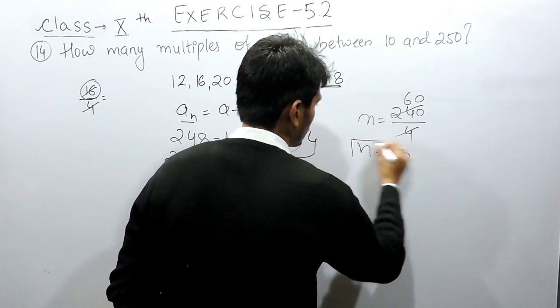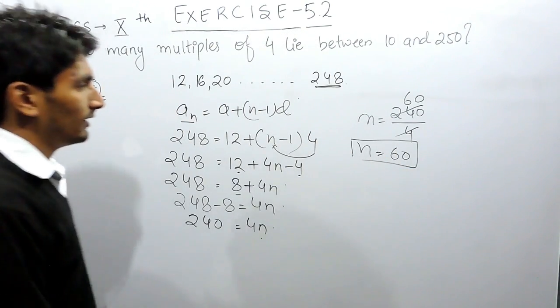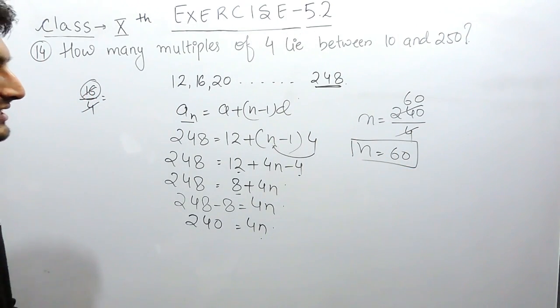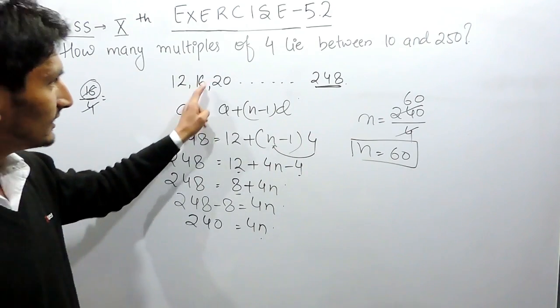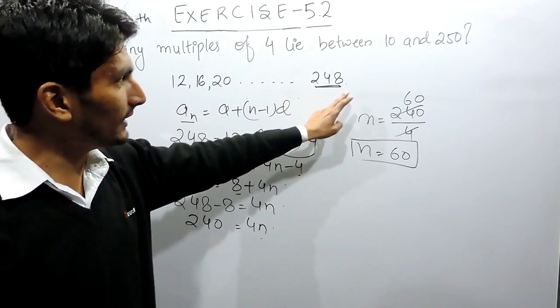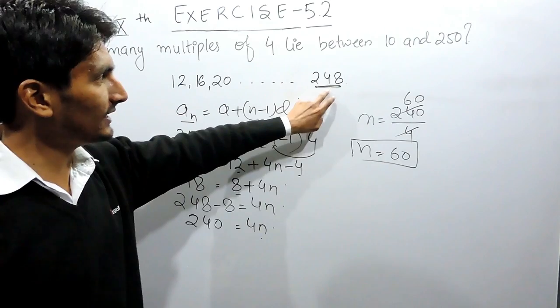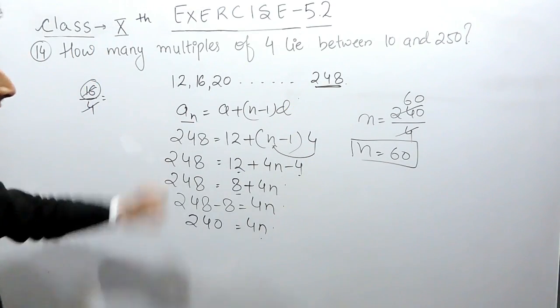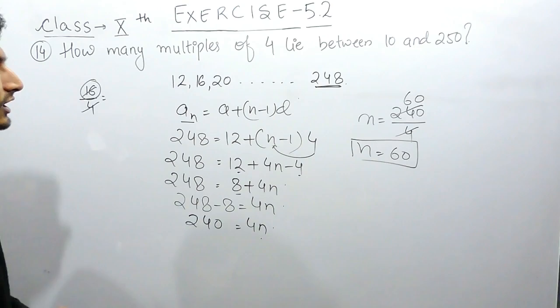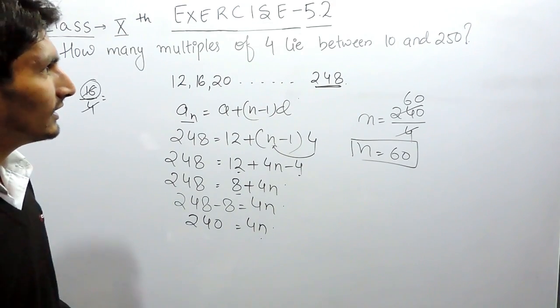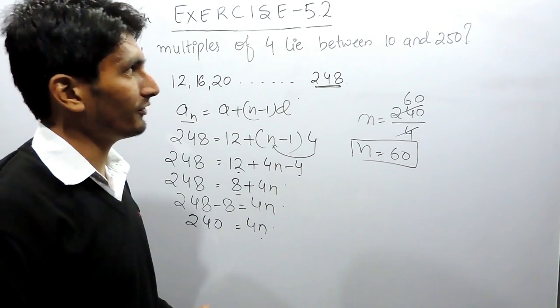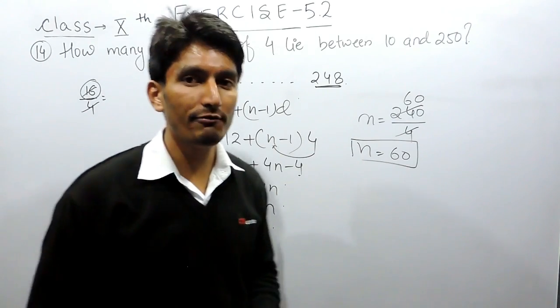Here the value of n is 60. This means there are 60 terms in this AP and the 60th term is 248. So there are 60 terms in this AP or you can say there are 60 numbers between 10 and 250 which are divisible by 4.